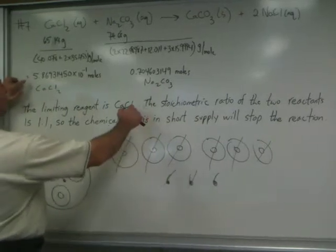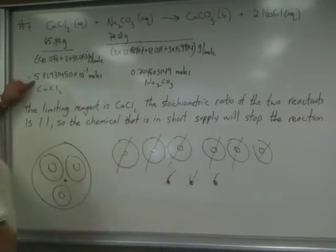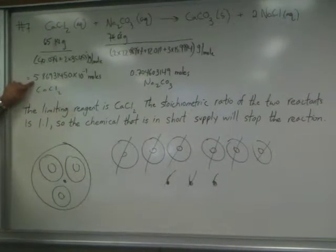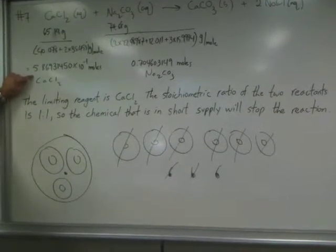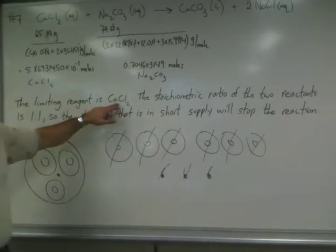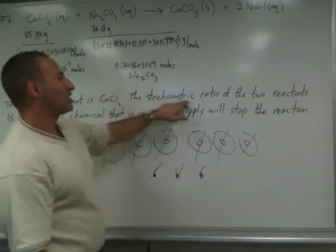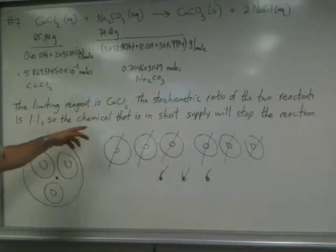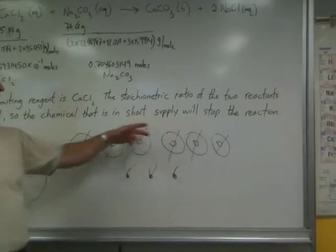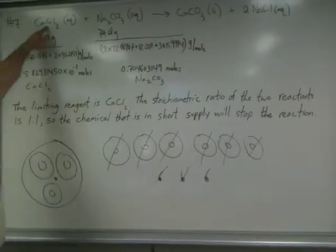You see that 0.7 versus 0.58 means the calcium chloride is going to run out first. So the limiting reagent is calcium chloride, and the stoichiometric ratio of the two reactants is one to one. So the chemical that is in short supply will stop the reaction. In this case, it is calcium chloride.